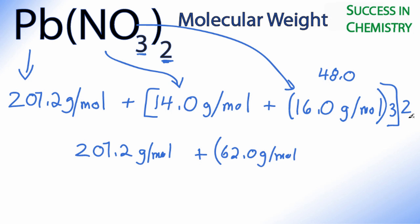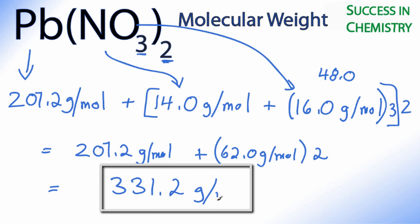But I still need to multiply that by 2. I'm going to multiply that by 2. So I'm going to take my 207.2 plus 62.0 times 2. That will give me a total of 331.2 grams per mole.